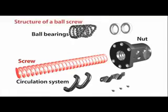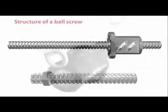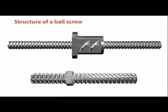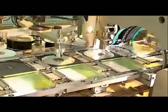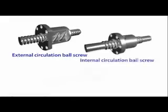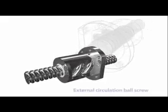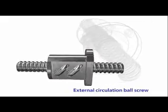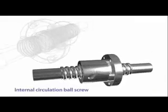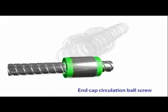Ball screws are composed of screws, nuts, a recirculation system, and ball bearings. They are low friction transmission elements that can be used to convert rotational motion to linear motion, or to convert torque to axial reciprocating action. There are three types of ball screws which differ in how their ball bearings circulate: external circulation ball screws, internal circulation ball screws, and end cap circulation ball screws.